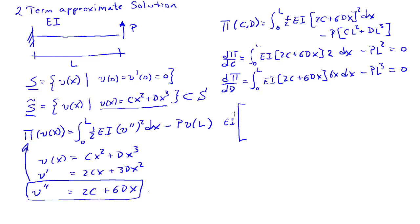Writing EI out front, we have 4L, 12L squared, 12L squared, 12L cubed. We'll always get symmetric matrices here. This times CD equals PL squared, PL cubed.